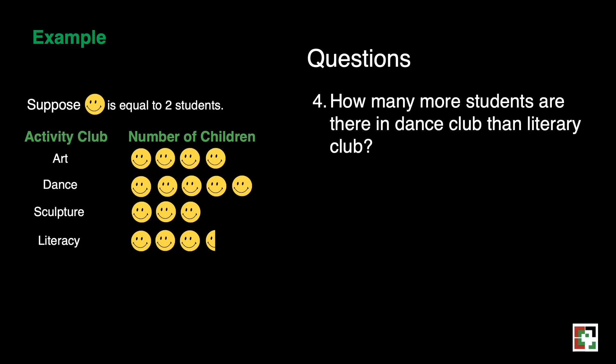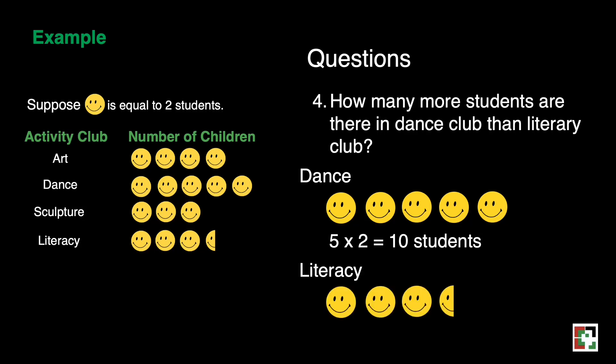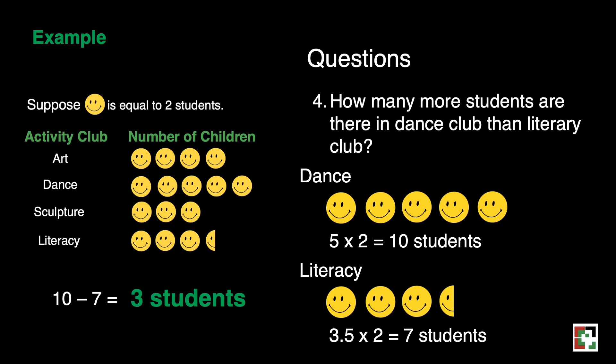For the last question, how many more students are there in dance club than literacy club? We need to find the number of students in each club and then subtract. For dance, there are five smileys: five times two equals ten. For the literacy club, three and a half smileys times two equals seven students. Ten minus seven equals three students. The final answer is three students.